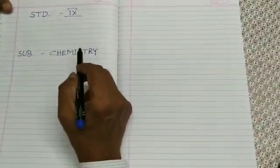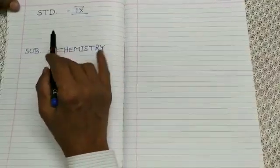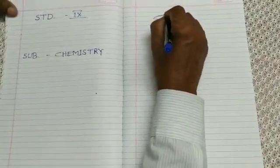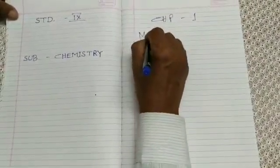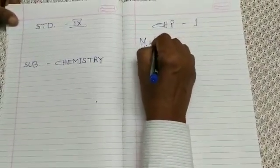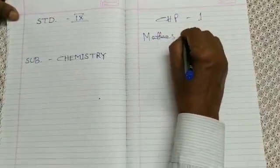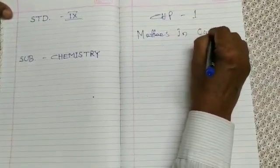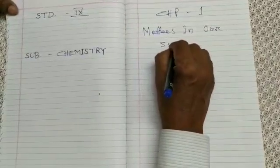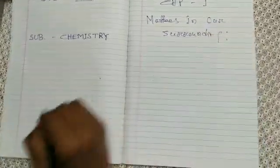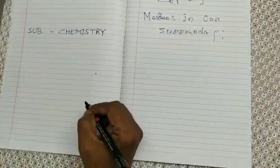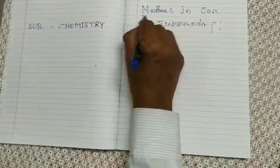Hello Students. Today I am going to discuss in Standard and Dime in Subject Chemistry, 1st Chapter 1: Matters in Our Surroundings. This is the 1st Chapter.